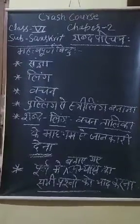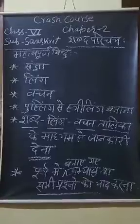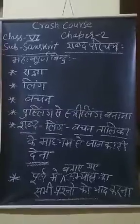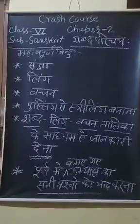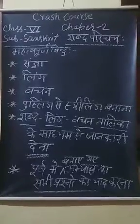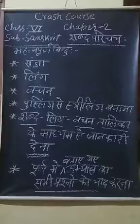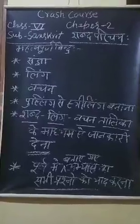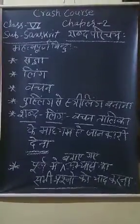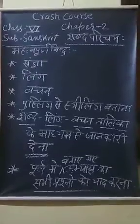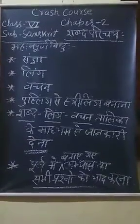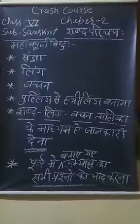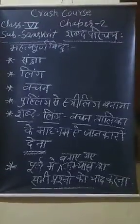इस भाग में अकारांत पुल्लिंग शब्दों के बारे में पढ़ेंगे। अकारांत यानी जिसका अंतिम वर्ण 'अ' हो, पुल्लिंग जिससे पुरुष जाति का बोध हो। जैसे — गर्दभ (गधा), वानर (बंदर), मूषक (चूहा), मीन (मछली), अश्व (घोड़ा), पाद (पैर), प्रकाश, उष्ट्र (ऊँट), छात्र, पिक (कोयल), कपोत (कबूतर) आदि — ये सभी अकारांत पुल्लिंग शब्द हैं।